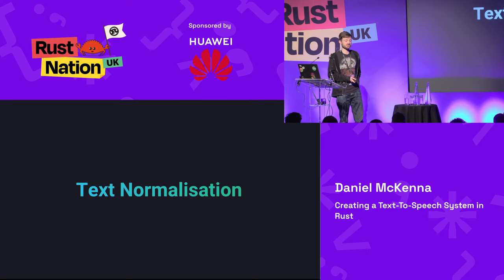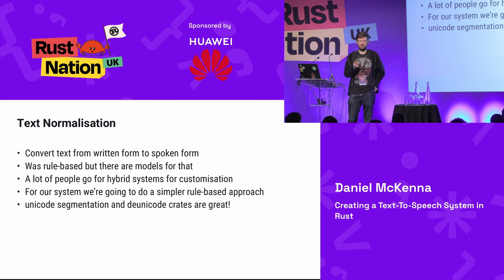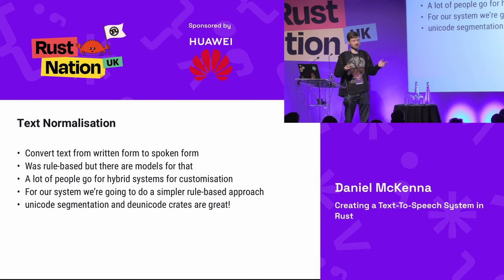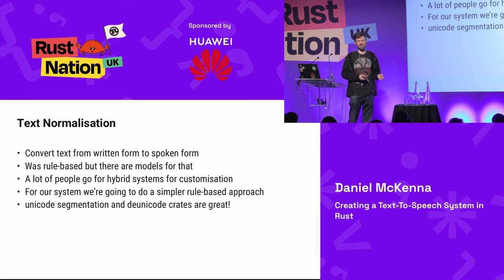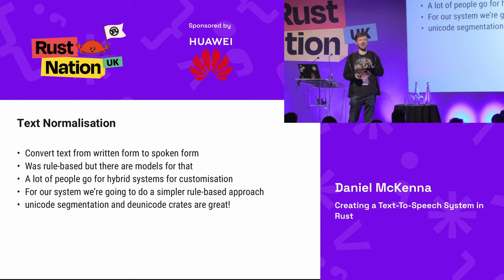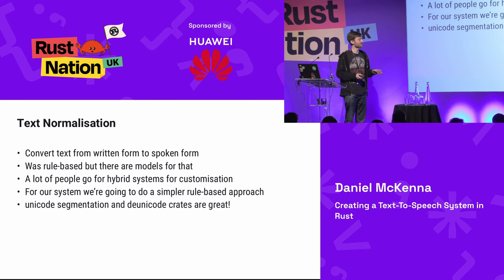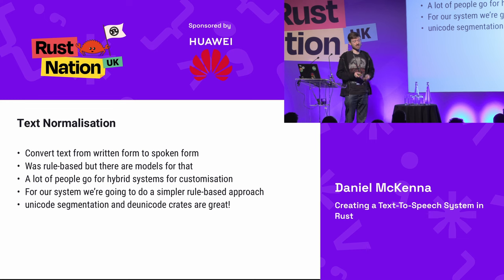Now we can actually start our TTS system with text normalization. We want to convert text from the written form to the spoken form — written text is ambiguous. Traditional systems were rule-based: linguists made big decision trees. Models like GRUT are a popular mixture of rule-based and hybrid approaches. I took a simple rule-based approach since I didn't want to train too many models. I have to shout out the Unicode segmentation and the d-unicode crates — they're necessary tools in your toolbox for this type of processing in Rust.